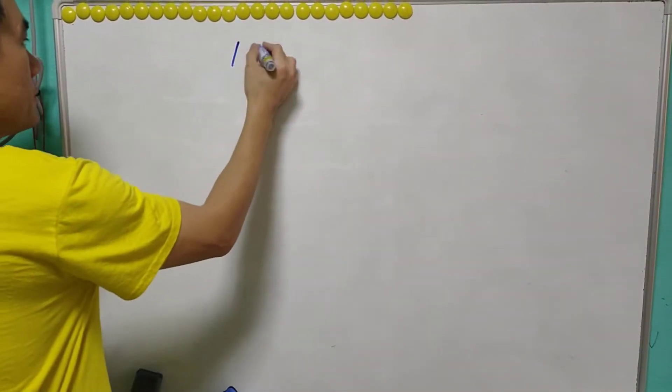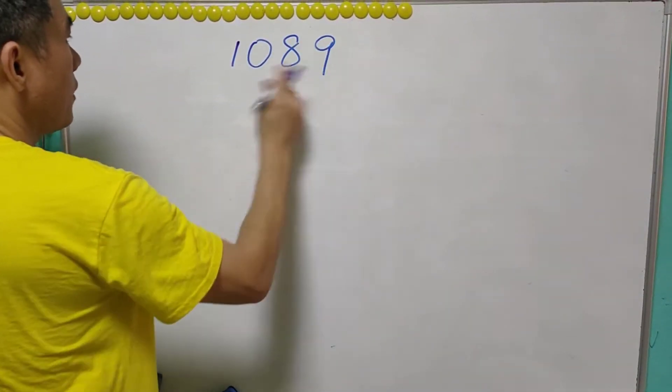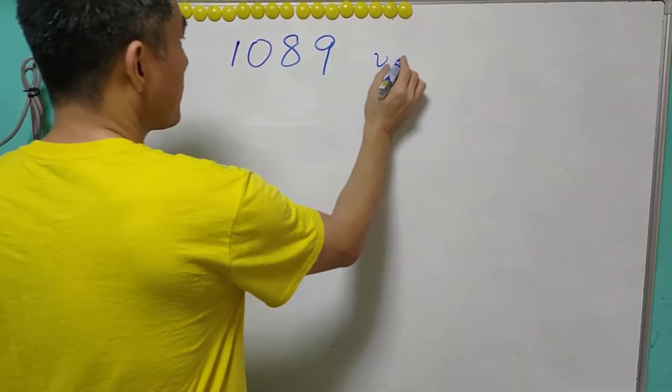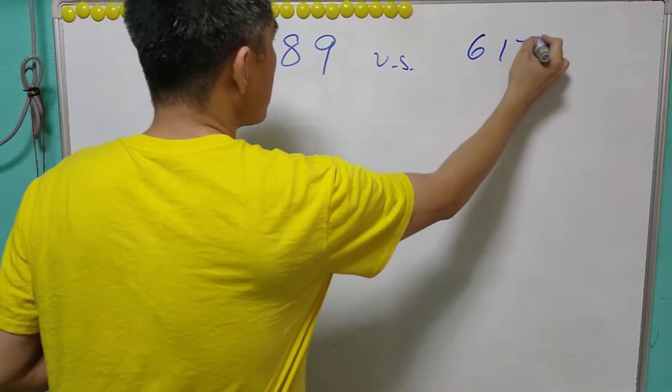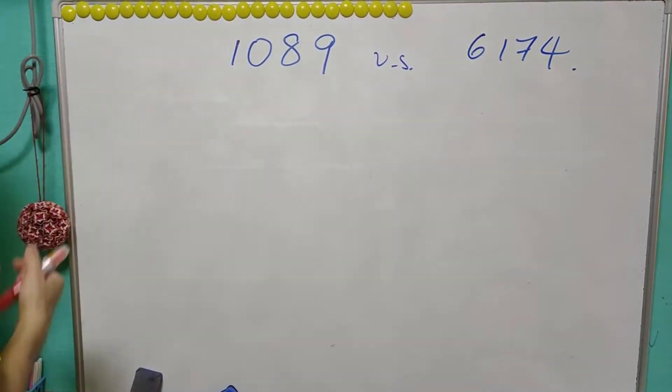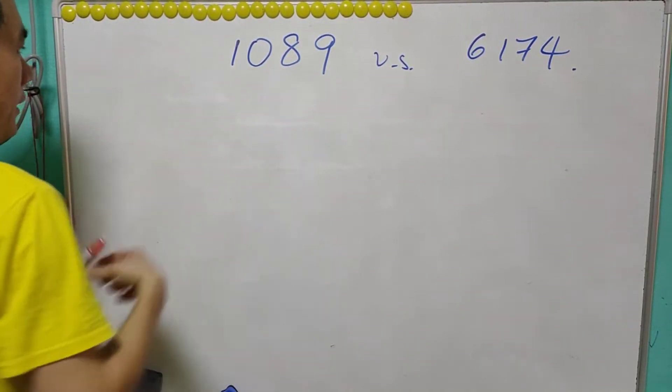Today we are going to talk about these two special numbers: 1089 and 6174. We begin with this 1089.